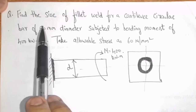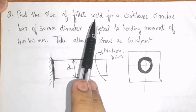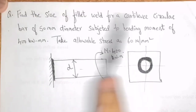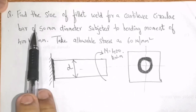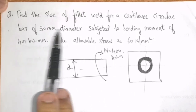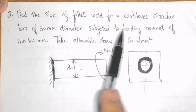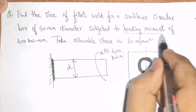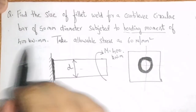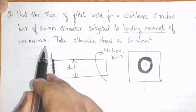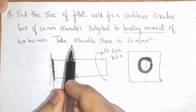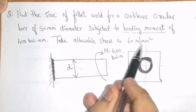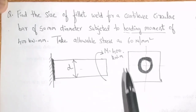The question is: find the size of a fillet weld for a cantilever circular bar of 50 mm diameter subjected to a bending moment of 400 kilo Newton mm. Take allowable shear stress as 60 Newton per mm square.